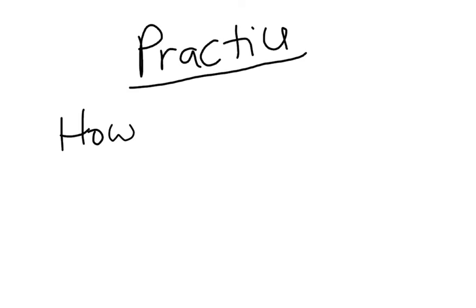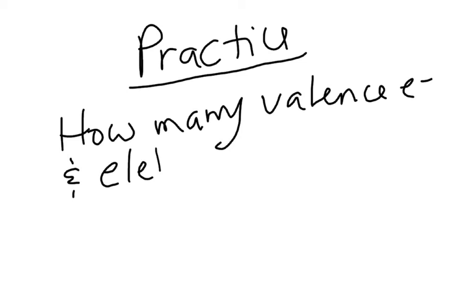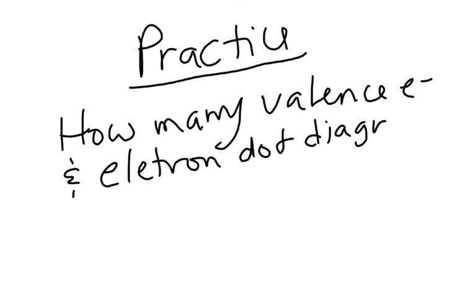Here is your practice. I want to know how many valence electrons, and I want you to draw electron dot diagrams. We will do potassium, cadmium, arsenic, and iodine. Those are the four. So I want to know how many valence electrons. In other words, I also want you to do the noble gas shorthand, if you can, and the electron dot diagrams. See you tomorrow. Bye.